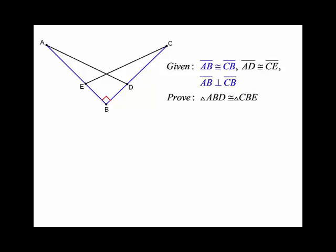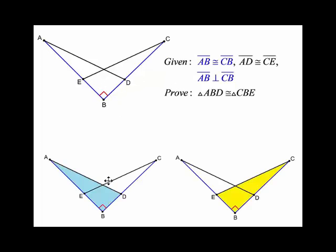Next example. We're given perpendicular lines. We're given that the length AB is congruent to CB, and also that the length AD is congruent to CE. We're supposed to prove that the blue triangle ABD is congruent to the yellow triangle CBE.